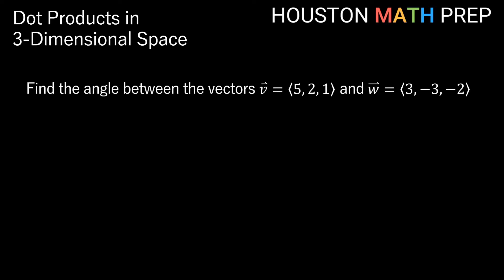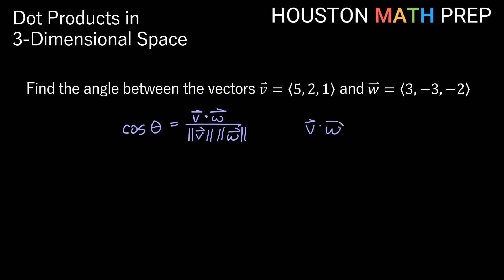Let's find the angle between vector V = (5, 2, 1) and vector W = (3, -3, -2). The formula is cosine of θ equals V dot W divided by the magnitude of V times the magnitude of W. First, V dot W: that's 5 times 3 plus 2 times -3 plus 1 times -2, which gives us 15 minus 6 minus 2, so V dot W equals 7.